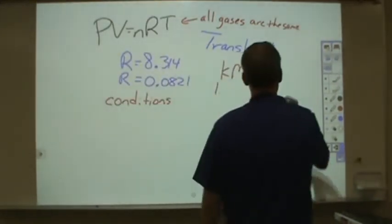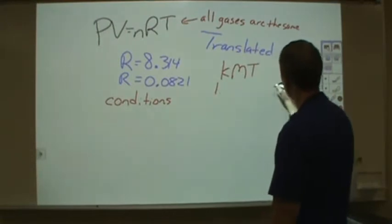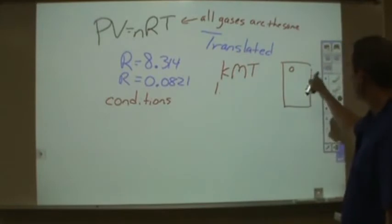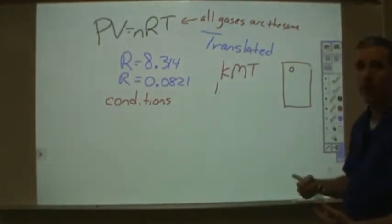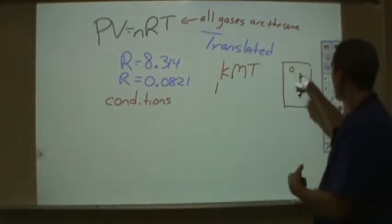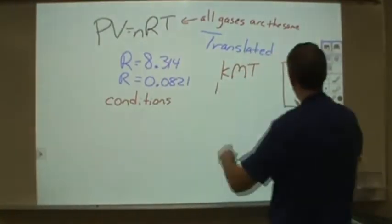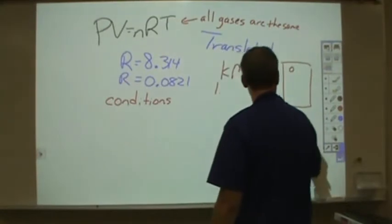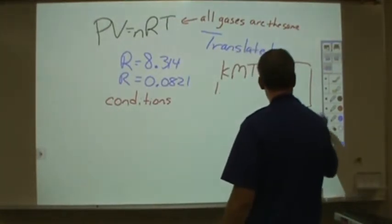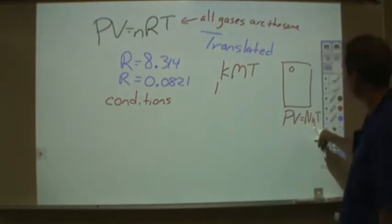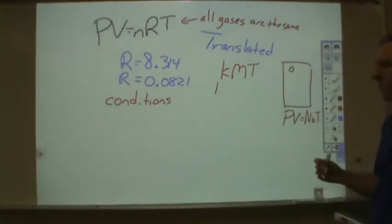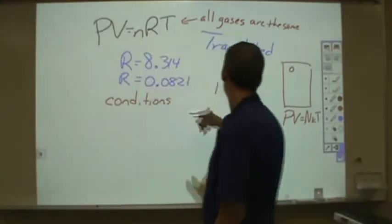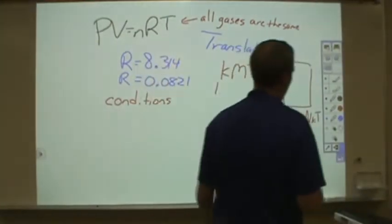If you take a higher level class then you have a chance that they might actually take a container and put a particle in it and start to go through and show how often it will collide with the walls and how fast it is going and how that connects the temperature. And they will go through and they will derive a very similar equation to this. And it is PV equals NKT. Where K is a Boltzmann constant and N is the number of molecules instead of moles.